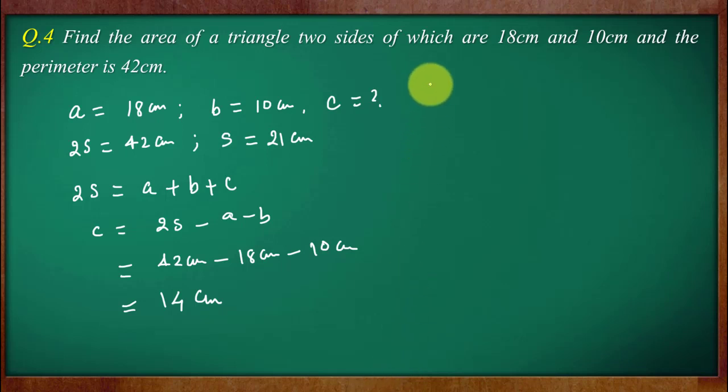Now here we will simply apply Heron's formula. Area of triangle a, b, c is equal to square root of s into s minus a into s minus b into s minus c.